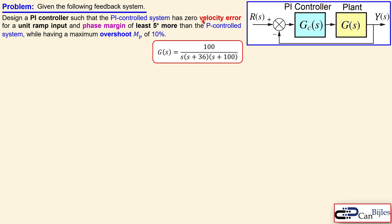First let's talk about the velocity error before we move on. The velocity error is the error you have when you have the unit ramp input in this case, which must be zero. Now we have an S already — one pure integrator — and the PI controller will also contribute one integrator, which is also a pole at the origin. So you get two integrators and that will definitely make this velocity error zero. So this condition is definitely already fulfilled.